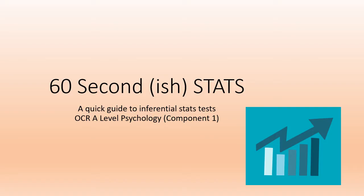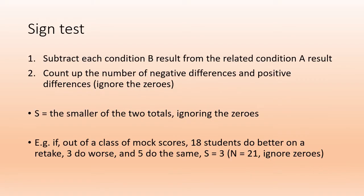We're going to start with the Sign test. Really easy: just subtract the scores from group B from the scores from group A. You can do it the other way around if you want, it doesn't really matter. Count up the number of negative differences and positive differences, and S is the smaller number of the two, ignoring the zeros. There's an example at the bottom of the page.